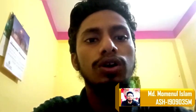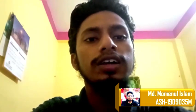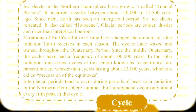Discussing the glacial-interglacial cycles: ice sheets in the northern hemisphere have grown — these are called glacial periods, occurring most recently about 120,000 to 11,500 years ago. Since then, Earth has been in an interglacial period and ice sheets have retreated. Glacial periods are colder, dustier, and drier than interglacial periods. The cycles have waxed and waned throughout the Quaternary period, and since the middle Quaternary, the cycles have had a frequency of about 100,000 years.